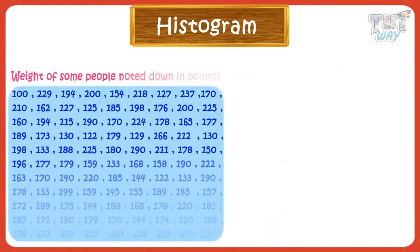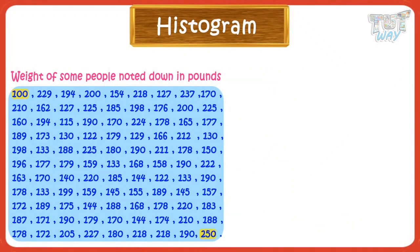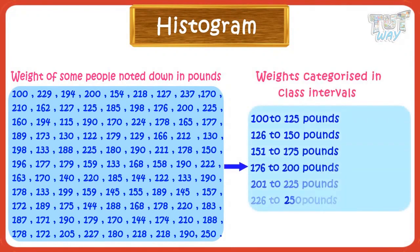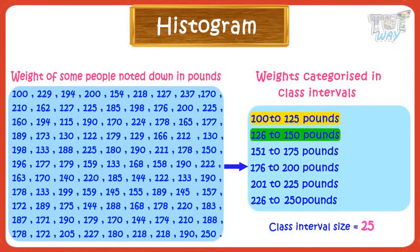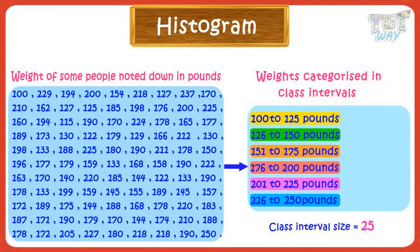The weight of some people was noted down. Weights were in the range from 100 to 250. Small class intervals or categories can be made, and each category or class interval is the same size — 25 in size: 100 to 125 pounds, 126 to 150 pounds, 151 to 175 pounds, 176 to 200 pounds, 201 to 225 pounds, and 226 to 250 pounds.